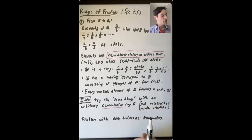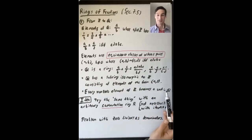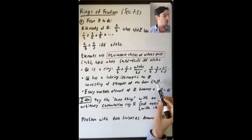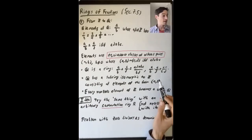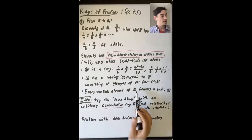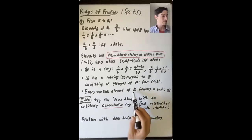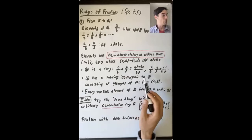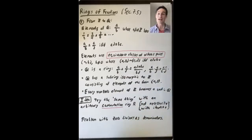What Dummit and Foote do, and what will be really convenient going forward, is to say that this subring of Q that's isomorphic to Z is what we mean when we say Z is a subring of Q. Every nonzero element of Z becomes a unit in Q — for example, the equivalence class (2, 1) is a unit in Q because (2, 1) times (1, 2) is the identity (1, 1).